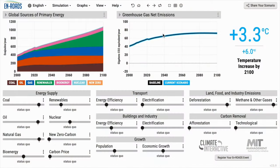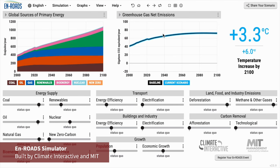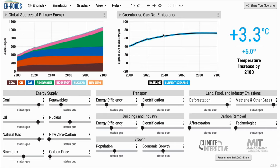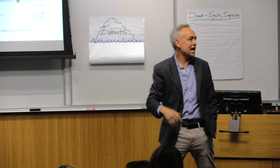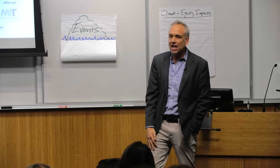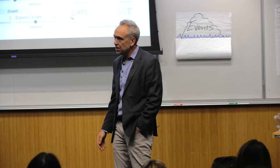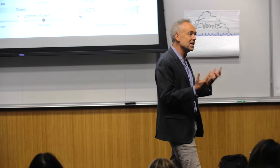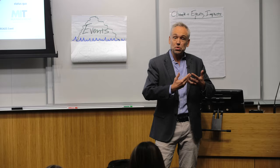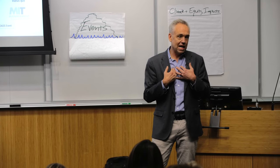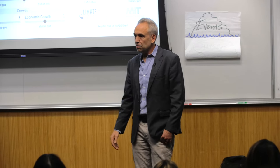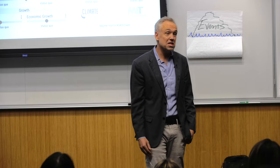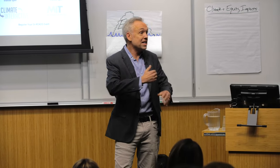We're going to use a simulator called En-ROADS. We built it with our colleagues at MIT Sloan Sustainability Initiative. It uses a system dynamics model — high-order, non-linear differential equation models, basically applied electrical engineering and control theory — made much more accessible in simulations that people actually use. The actual use is the mission of Climate Interactive, the non-profit I'm executive director of, where right now 500,000 people are using the model in 21 languages all around the world.